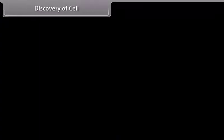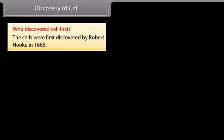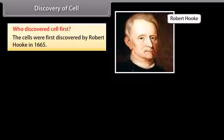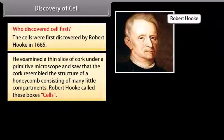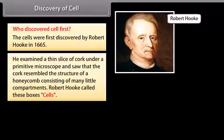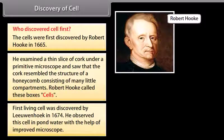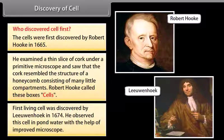Who discovered the cell first? Cells were first discovered by Robert Hooke in 1665. He examined a thin slice of cork under a primitive microscope and saw that it resembled the structure of a honeycomb consisting of many little compartments. Robert Hooke called these boxes 'cells.' The first living cell was discovered by Leeuwenhoek in 1674, who observed it in pond water with the help of an improved microscope.